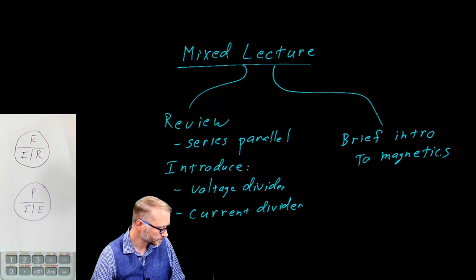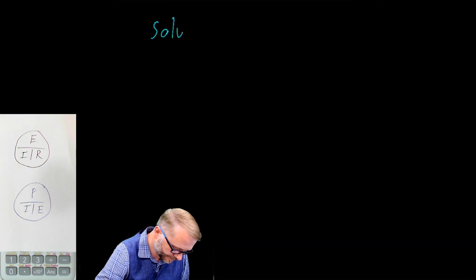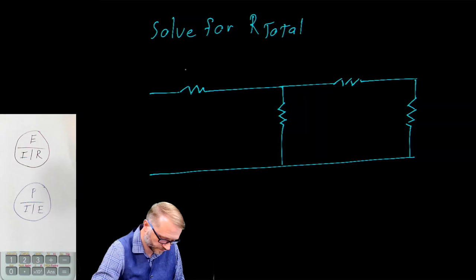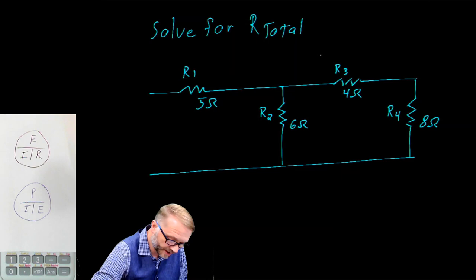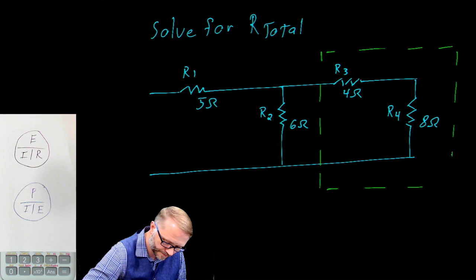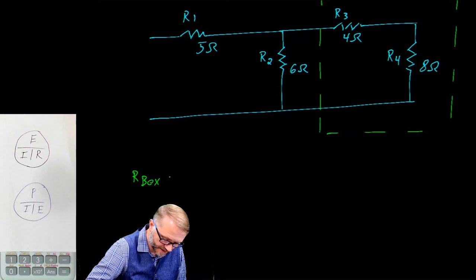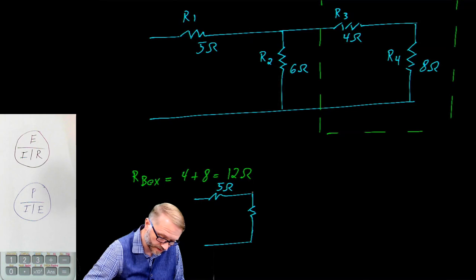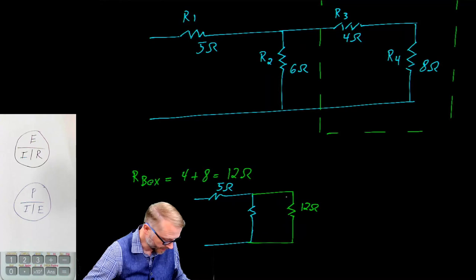Let's look at that series-parallel resistor question — solve for the total resistance given this circuit. Your opening move is to sketch a box around these two resistors, and we would say that the resistance of that box is 4 plus 8, or 12 ohms. We then redraw the circuit. Here's that 5 ohm resistor, here is the 6 ohm resistor, and now in green we add the resistor we just calculated — that was 12 ohms in parallel with 6 ohms.